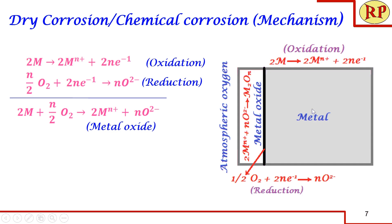Let us look into the mechanism of dry corrosion. Assume there is a piece of metal. On all sides we have the surface, but I am showing the reaction on only one side. When the metal comes in contact with oxygen, the metal undergoes oxidation to form metal ions, and oxygen undergoes reduction to form oxide ions. These metal ions and oxide ions combine to form metal oxide. Whether the metal inside the oxide layer will undergo further corrosion or not will be decided based on the nature of the metal oxide.